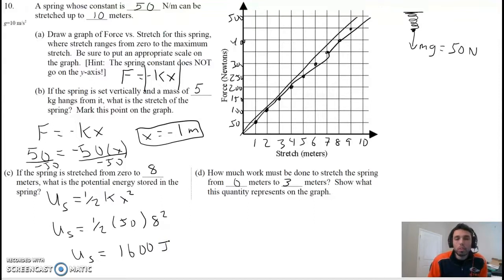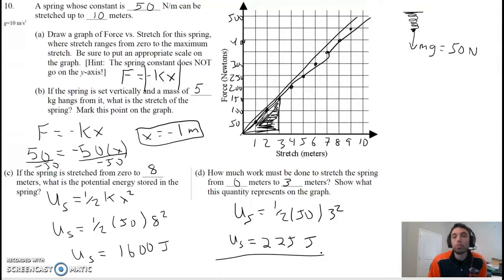How much work must be done to stretch the spring from 0 to 3 meters? Show what this quantity represents on the graph. For this part it's the exact same equation we just did, except this time instead of 8 for x, we're going to put in 3 for x. 1/2 times 50 times 3 squared, we're going to do the math and we're going to get 225 joules. If we were smart we could have realized, oh wait, isn't the work done the area under the curve of a force displacement graph? Yes it is, it also works for a spring. What's the area under the curve? 3 over, up 150, it's a triangle, so it's half that. 3 times 150 is 450, half of 450 is 225 joules. Either way you do it, you get the right answer.